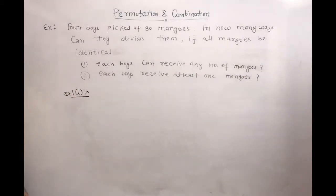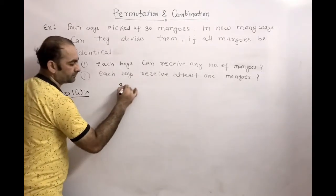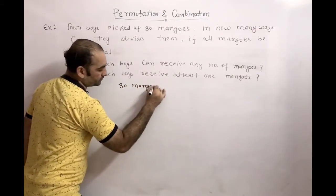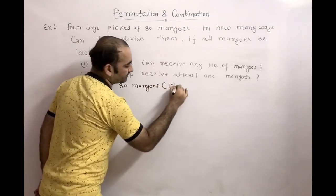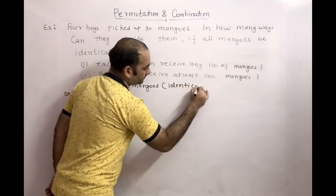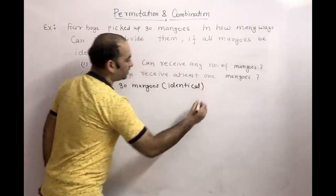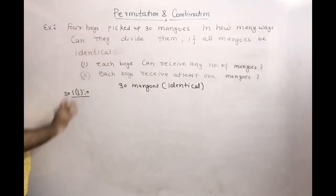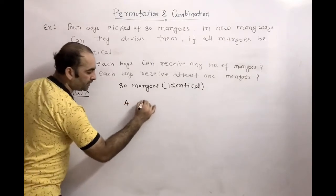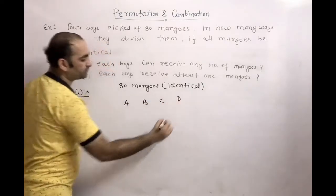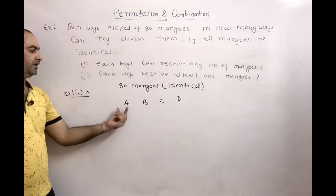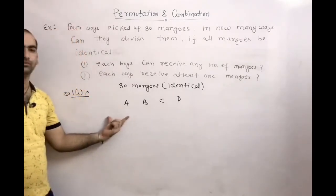So we have 30 mangoes and all are identical. We have to divide these 30 mangoes into four boys. We can label the four boys as A, B, C, and D.